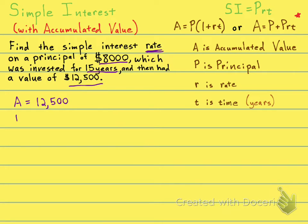P is the principal. When you think of principal, think of your pal that you've been with for a long time. So, the principal is what you started with, which is your $8,000.